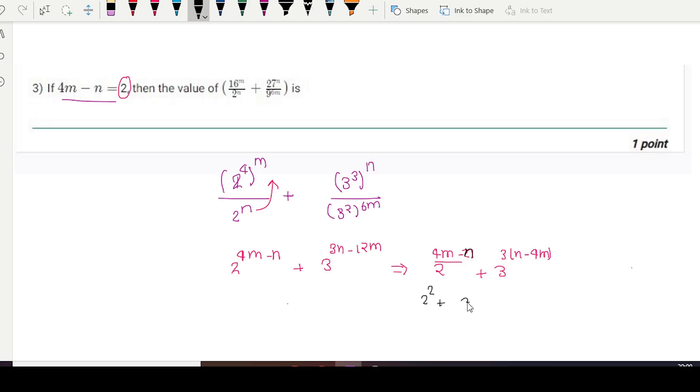So substitute the value, 3 power 3. 4m minus n is equal to 2, so it will be additive inverse, that is minus 2 for n minus 4m.